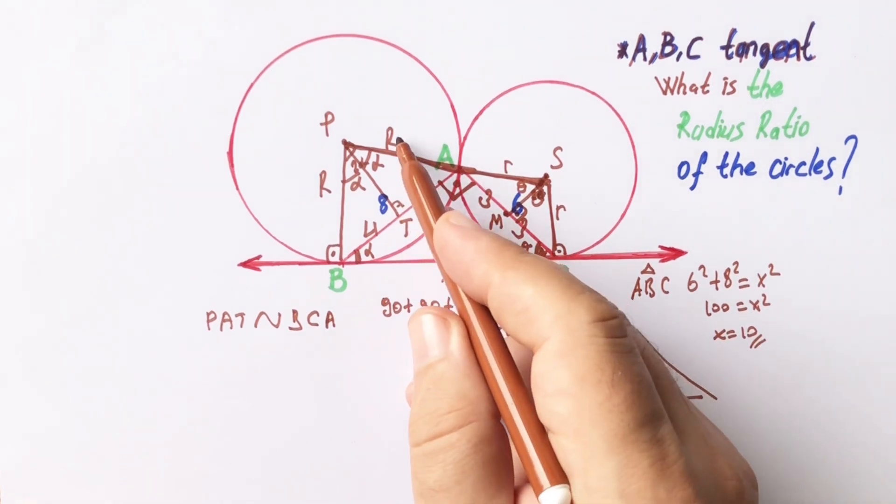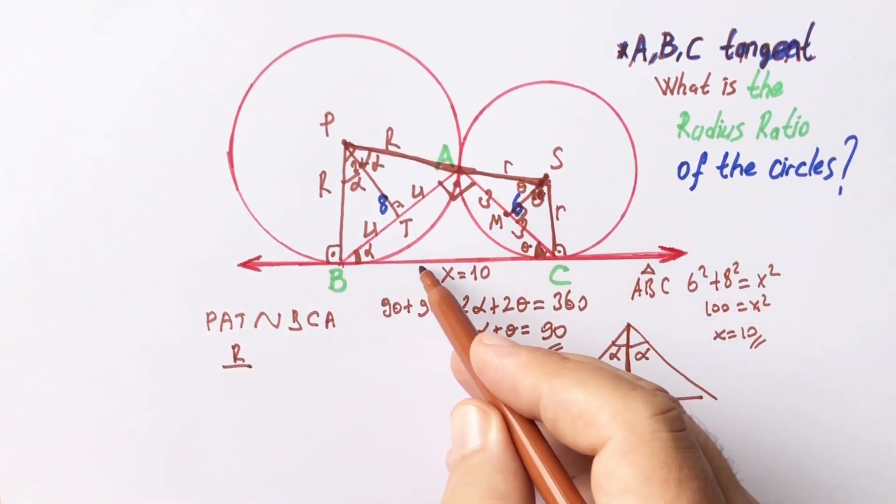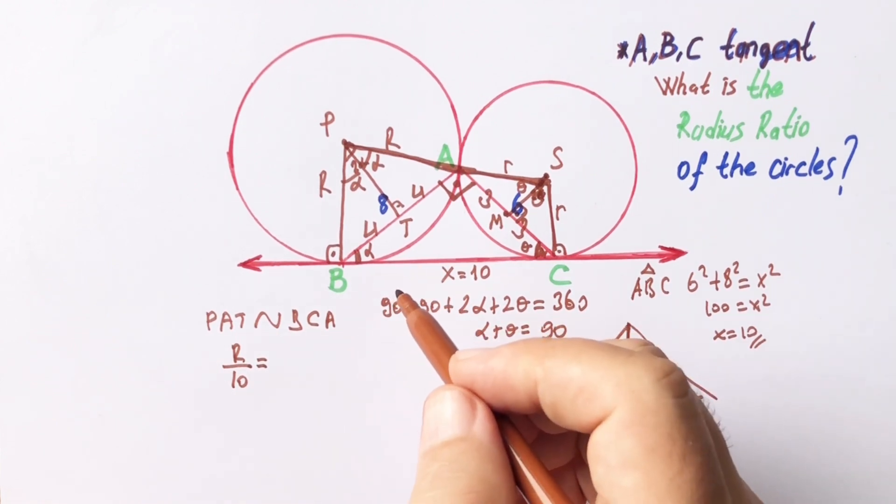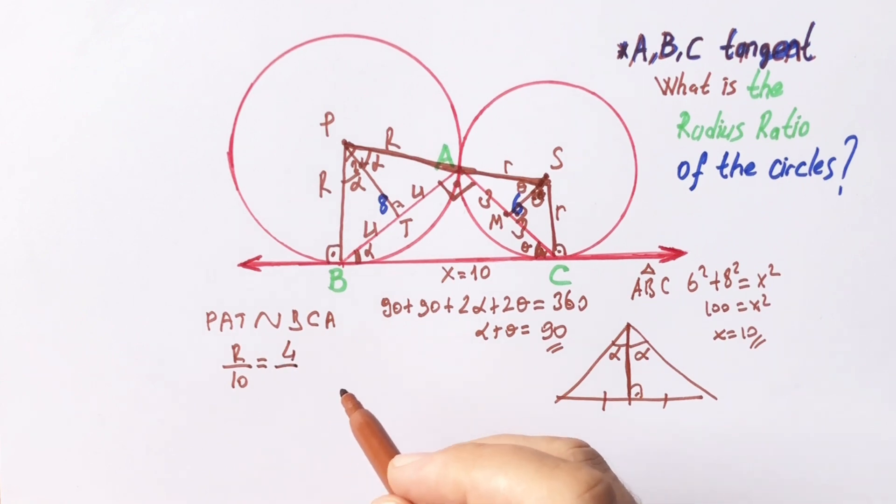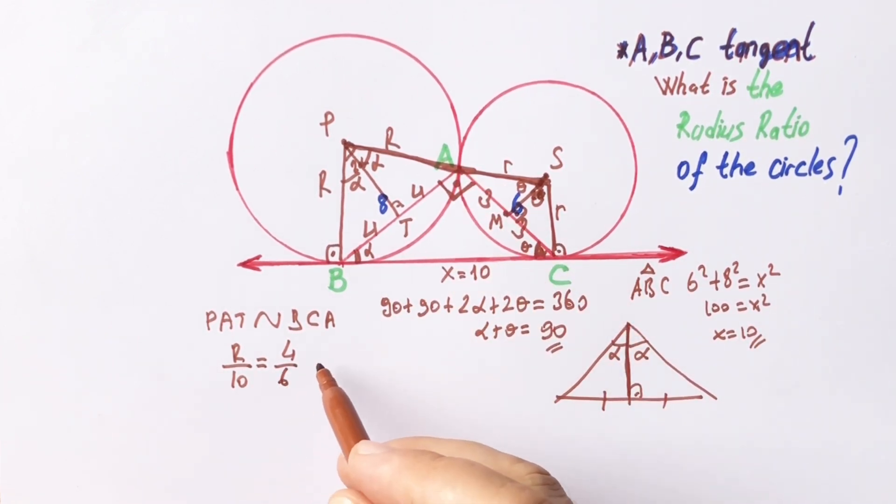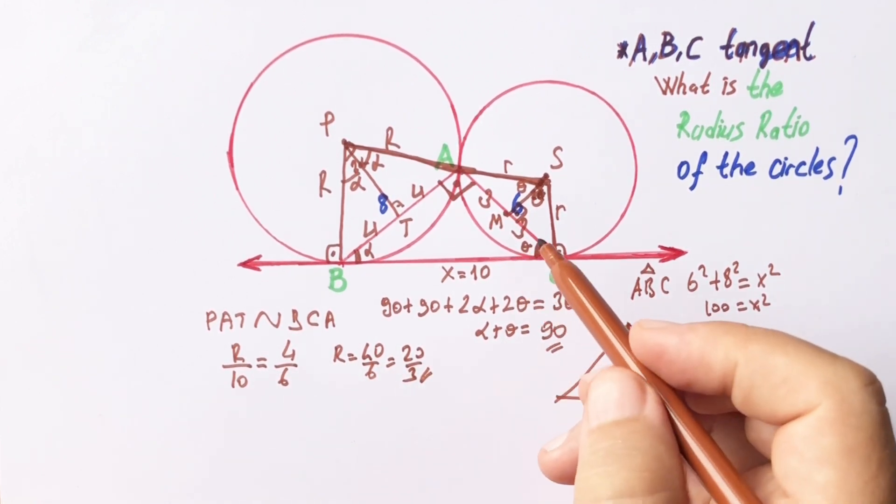Across 90 degrees is capital R over across 90 degrees is 10 units, equals across alpha is 4 over across alpha is 6. So capital R is going to be 20 over 3 units.